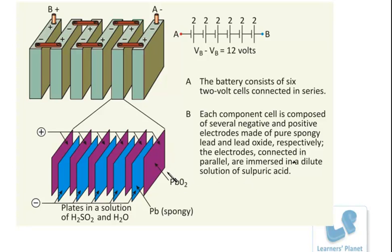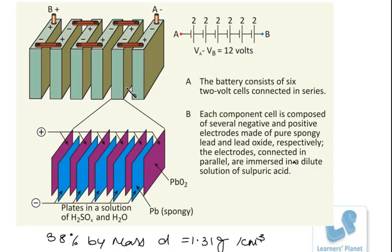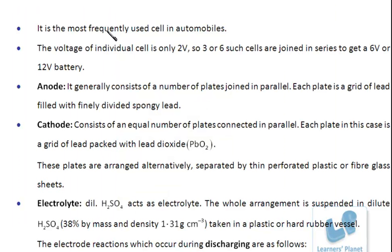The grid of lead with lead oxide forms one set of plates, and the grid of lead with spongy lead forms the other. These plates are in the solution of H2SO4 in water — 38% by mass with density 1.31 g/cm³. The voltage of each individual cell is only 2 volts, so 3 or 6 such cells are joined in series to get a 6-volt or 12-volt battery.